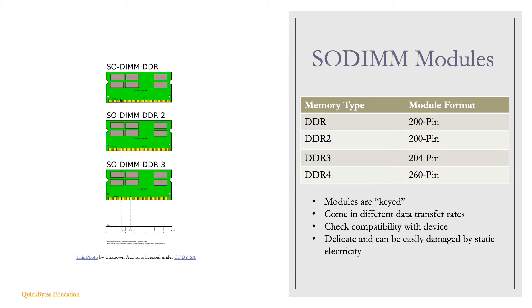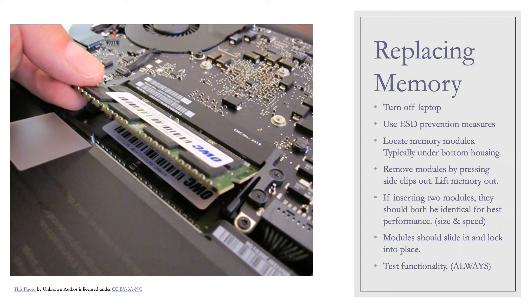When replacing or adding modules, check compatibility with the system and existing modules. These modules are delicate and can be easily damaged by static electricity or if inserted incorrectly. To replace memory: turn off the laptop, use ESD precautions, locate the modules typically under the bottom housing, and remove them by pressing the side clips out — the modules will pop up. If inserting two modules, they should be identical in size and speed for best performance. Gently slide and lock them into place, then test by checking they are recognized in the BIOS or operating system.